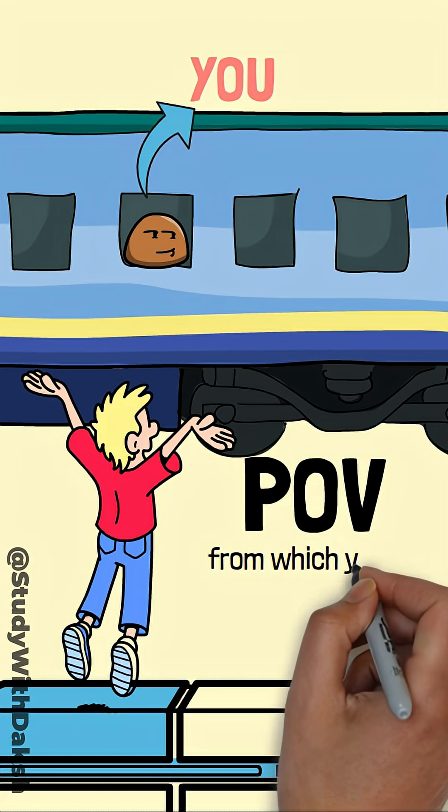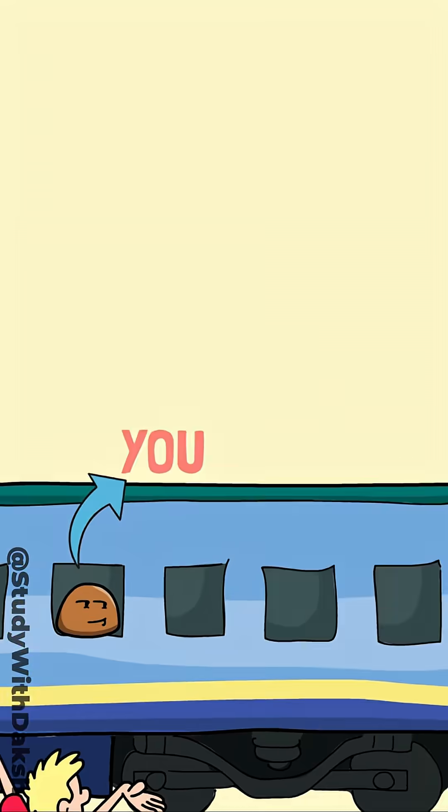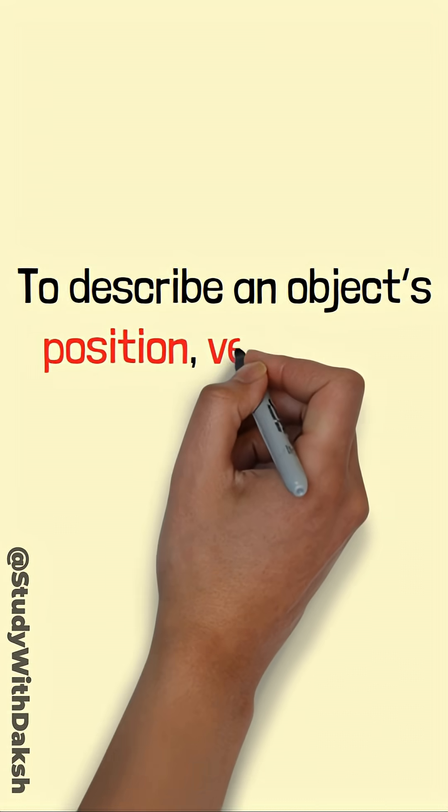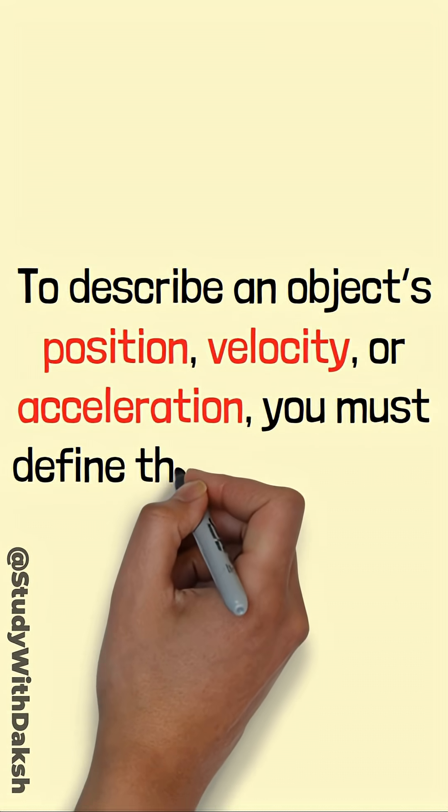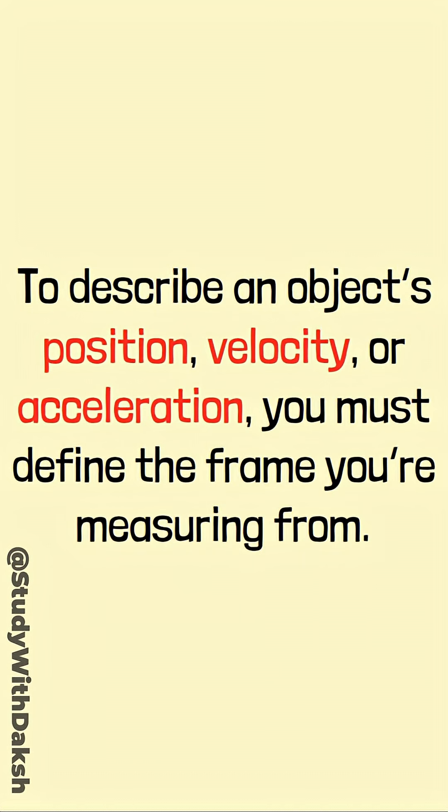It's basically the point of view from which you observe motion. To describe an object's position, velocity, or acceleration, you must define the frame you're measuring from.